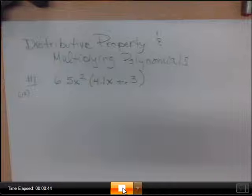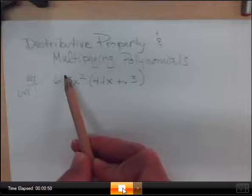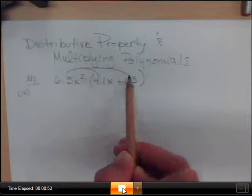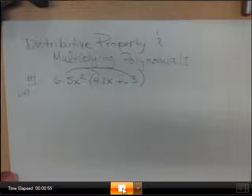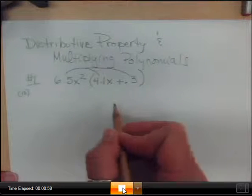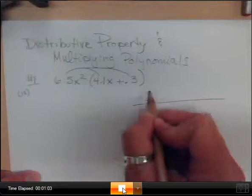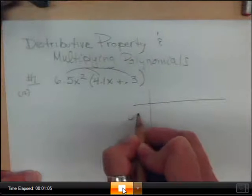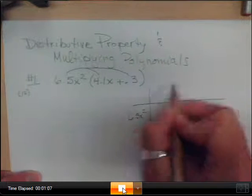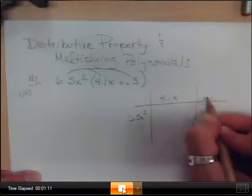So just like we did in number 2 on your flashback this morning, we're going to take that 6.5x² and we're going to multiply it times both things in the parentheses. So we have, if you like doing it the chart way, you could set it up like this where you have 6.5x² here, you have 4.1x here, and you have 0.3.